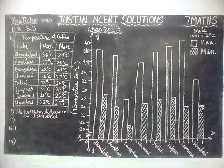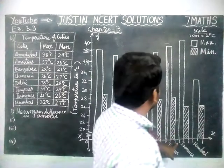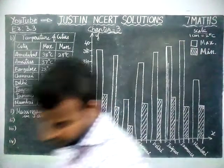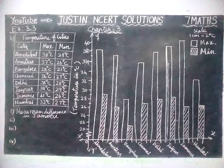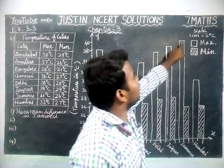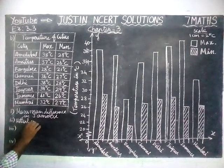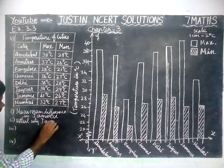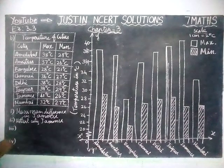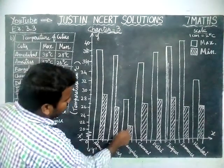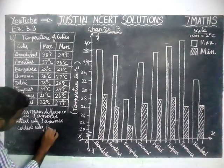Second question: which is the hottest city and which is the coldest city? The hottest city is Jammu, with a maximum temperature of 41°C. The coldest city is Bangalore, with a minimum temperature of 21°C.